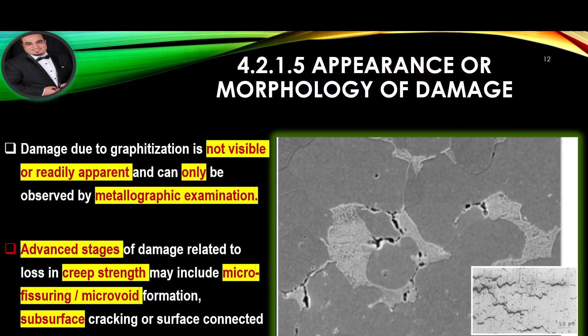Appearance or Morphology of Damage: Damage due to graphitization is not visible or readily apparent and can only be observed by metallographic examination. In advanced stages of damage, related loss in creep strength may include microfissuring, microvoid formation, subsurface cracking, or surface-connected cracking, as shown in the example image.